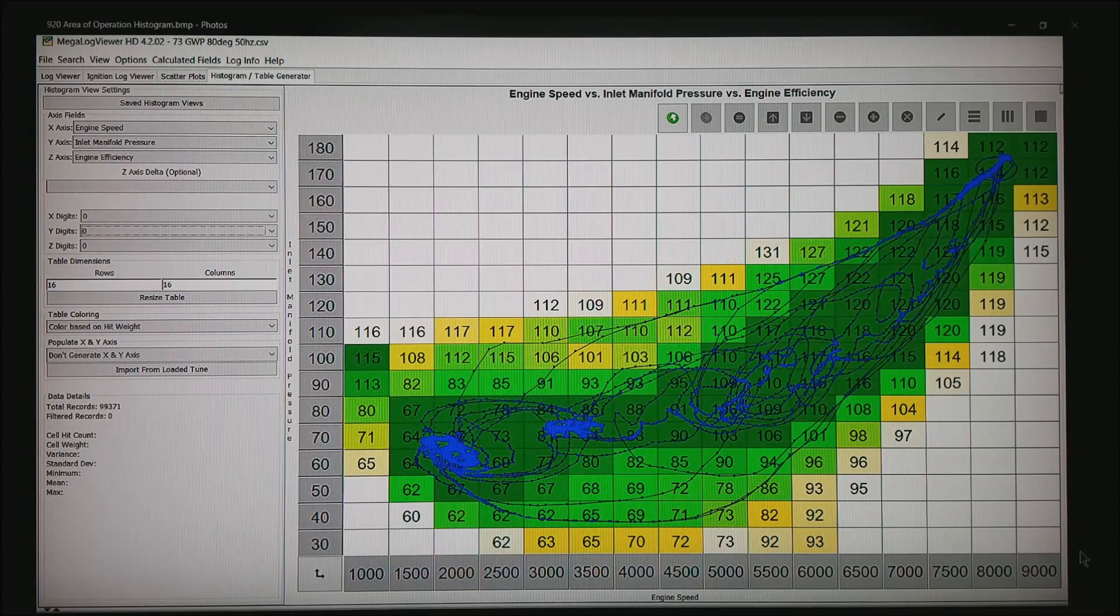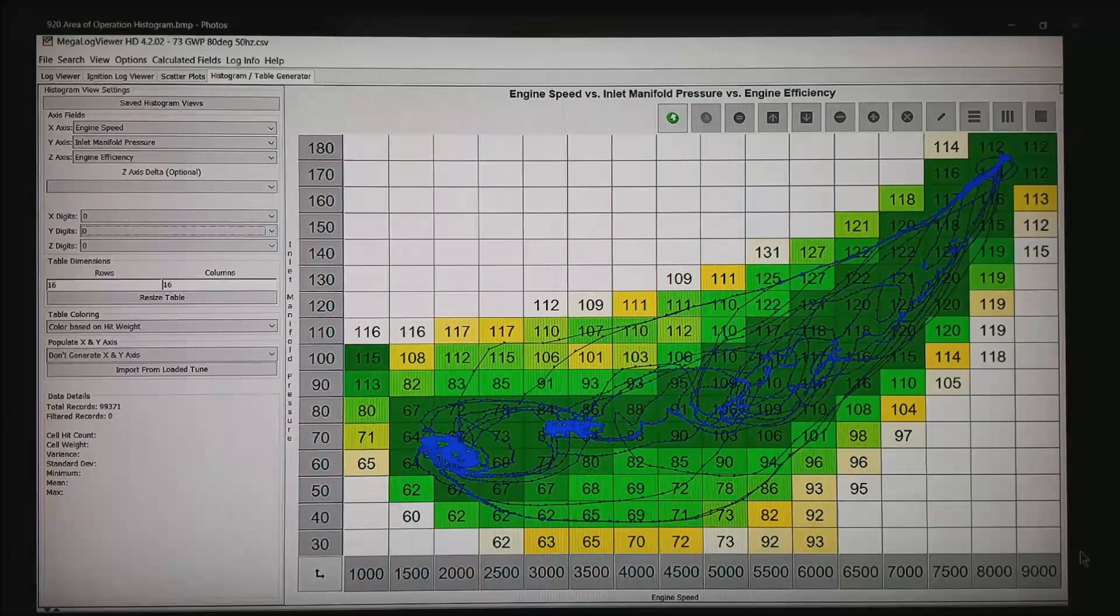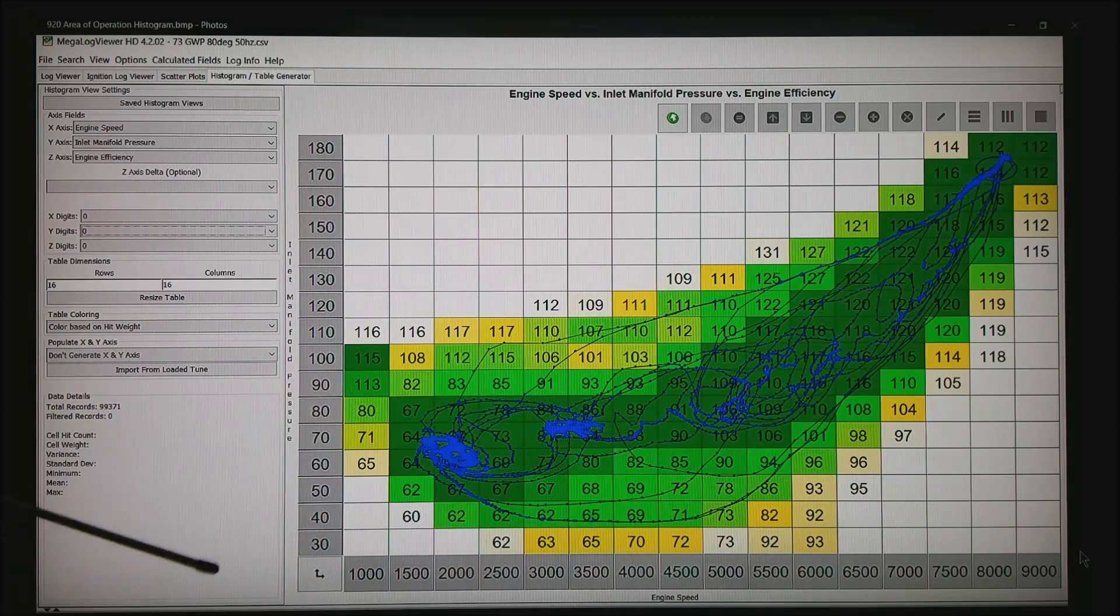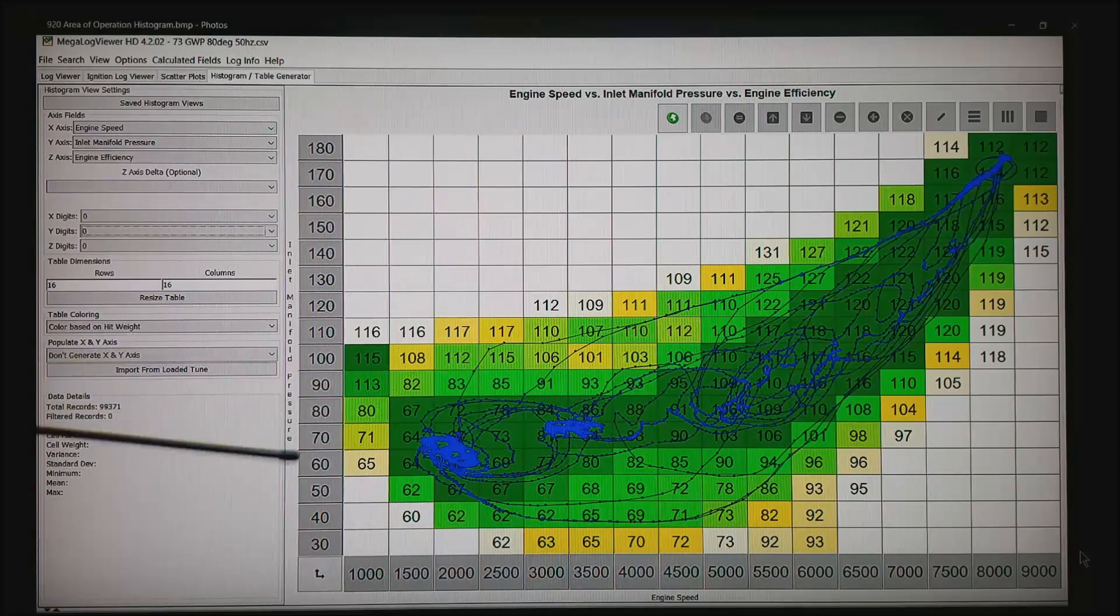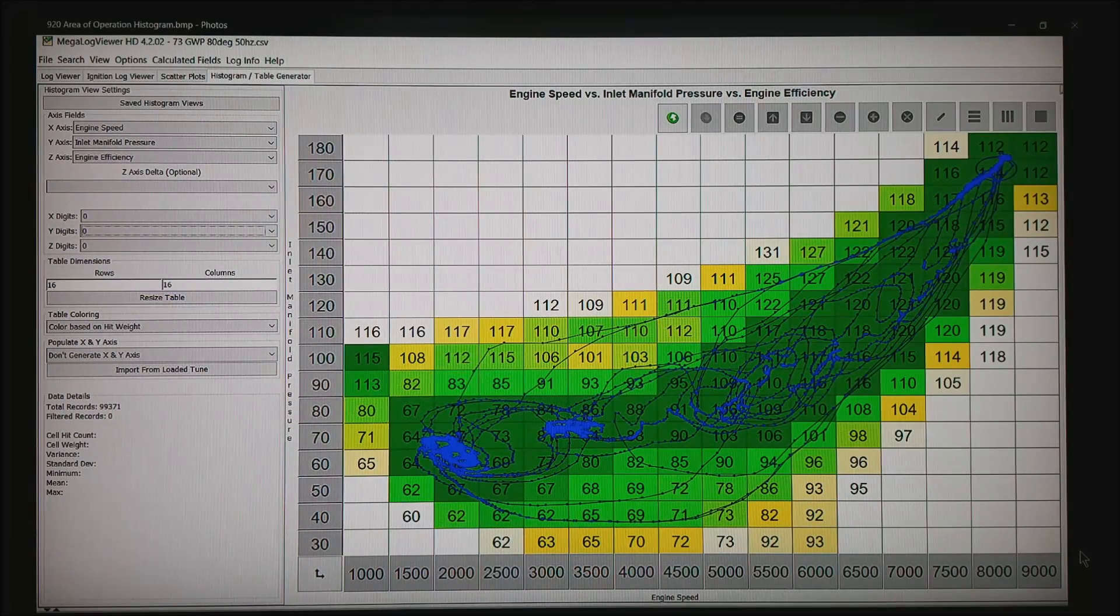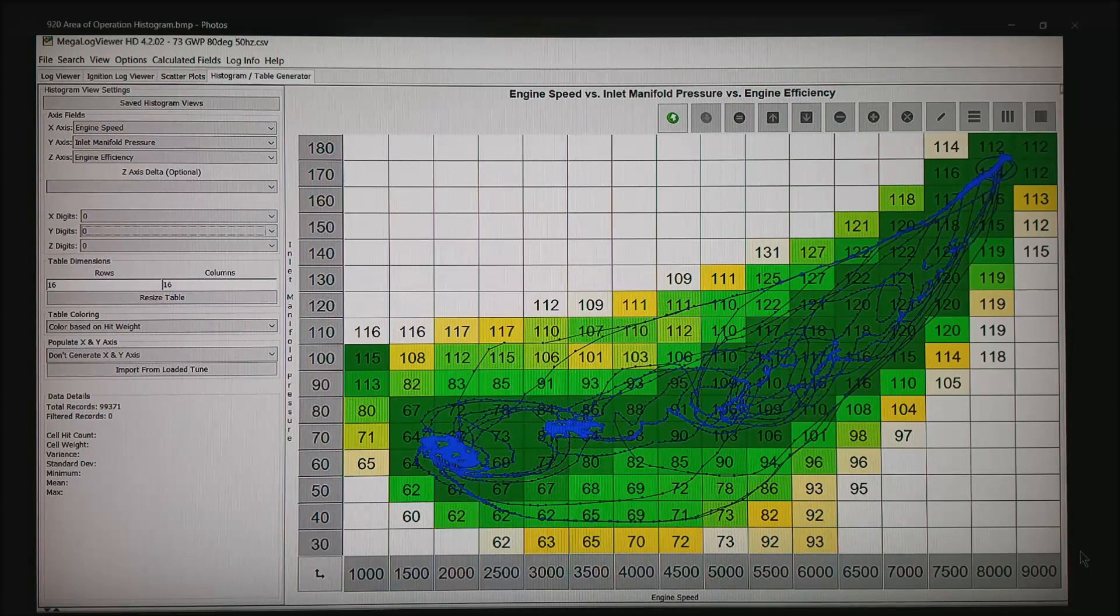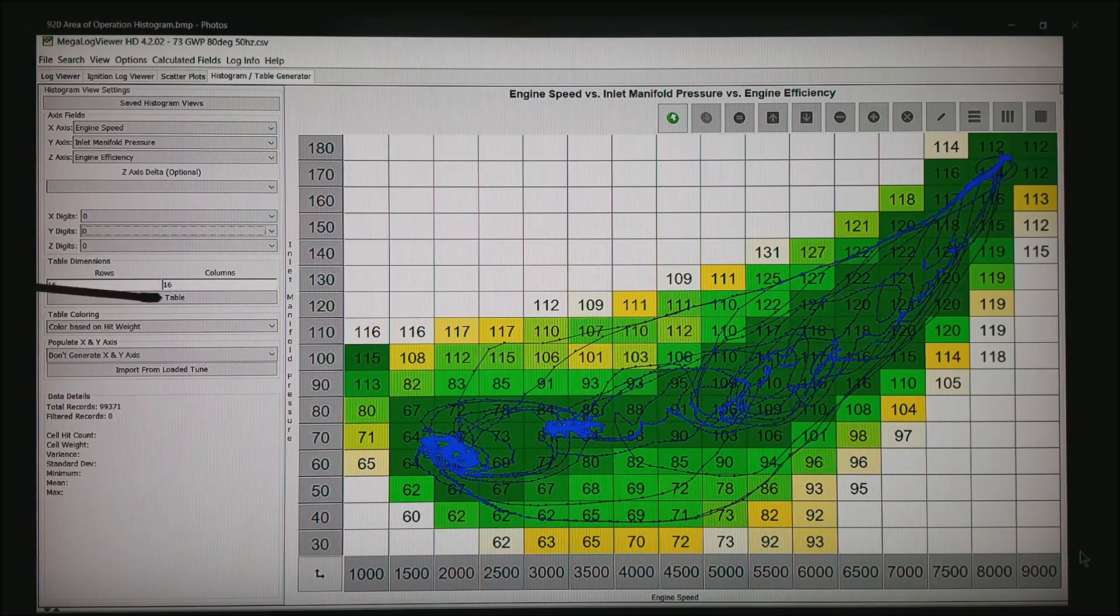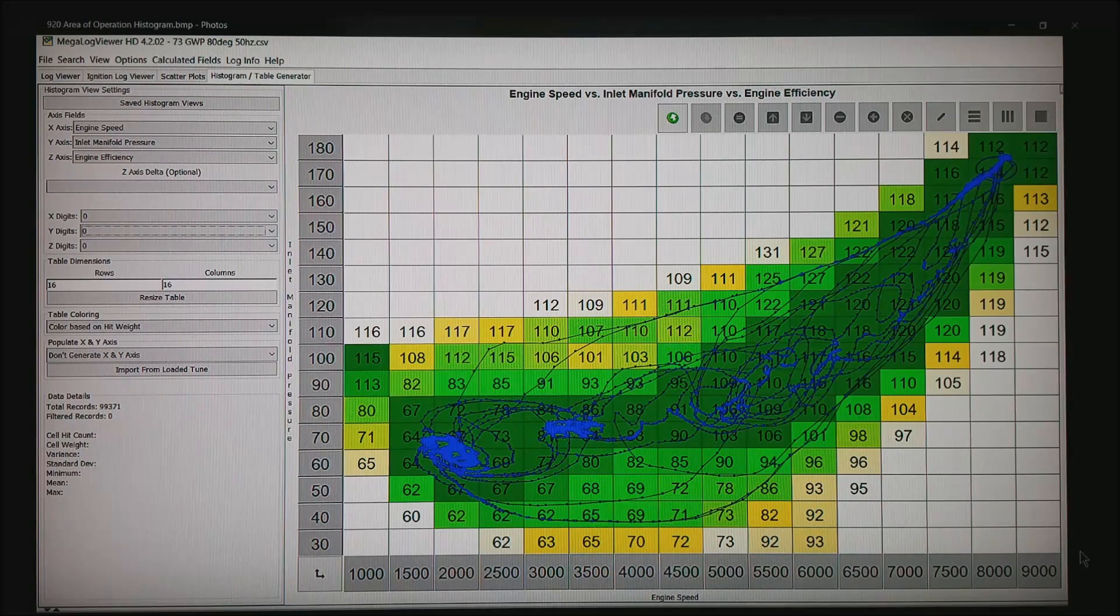What this is doing is grouping everything together in boxes where the boxes are possibly my tuning breakpoints in the tuning software. I can change this to any size table. I've made it 16 by 16 for convenience.